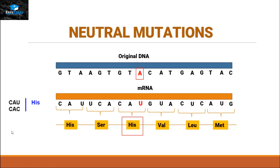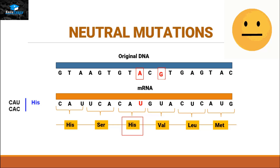This type of mutation is neutral because it is not affecting protein synthesis. Let's take another example. Now let's assume that this adenine gets replaced by guanine, and this guanine will produce cytosine instead of uracil on messenger RNA.